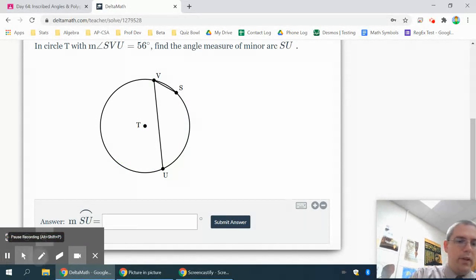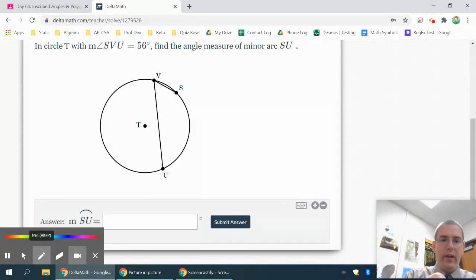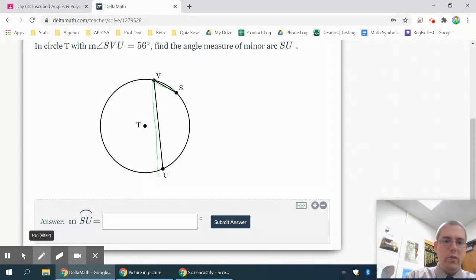Okay, this one again, mark your angle. It starts at S, then V, then U, so we're talking about that inscribed angle there. It tells you that this is 56 degrees, and it wants to know the measure of the arc that goes from S to U.